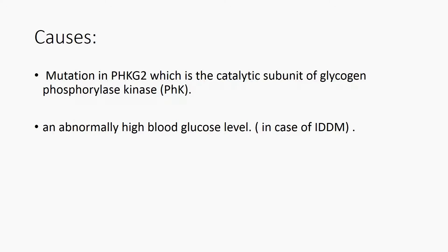Glycogen phosphorylase is the first enzyme in the pathway of glycogen metabolism. Mauryak syndrome occurs when there is a mutation in PHKG2 leading to an abnormally high blood glucose level, which is mostly seen in insulin-dependent diabetes mellitus.